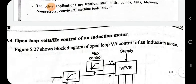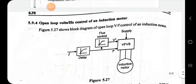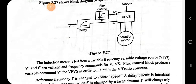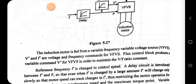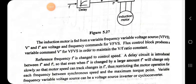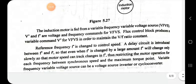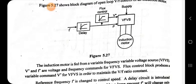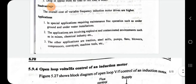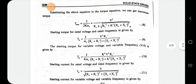For open-loop V/f control of an induction motor, a variable frequency variable voltage source is used. The variable voltage command V* and frequency reference F* are set; by changing V* and F*, the induction motor speed can be varied. A delay circuit is introduced, and instead of a VF drive, a cycloconverter can also be used.